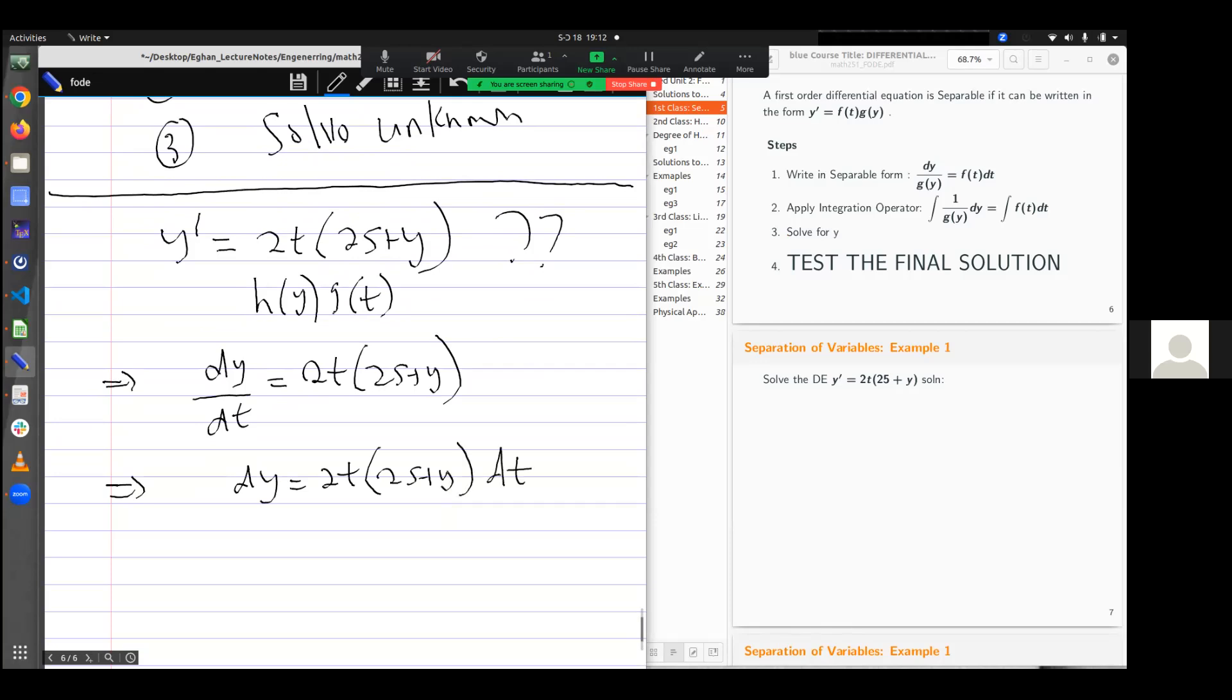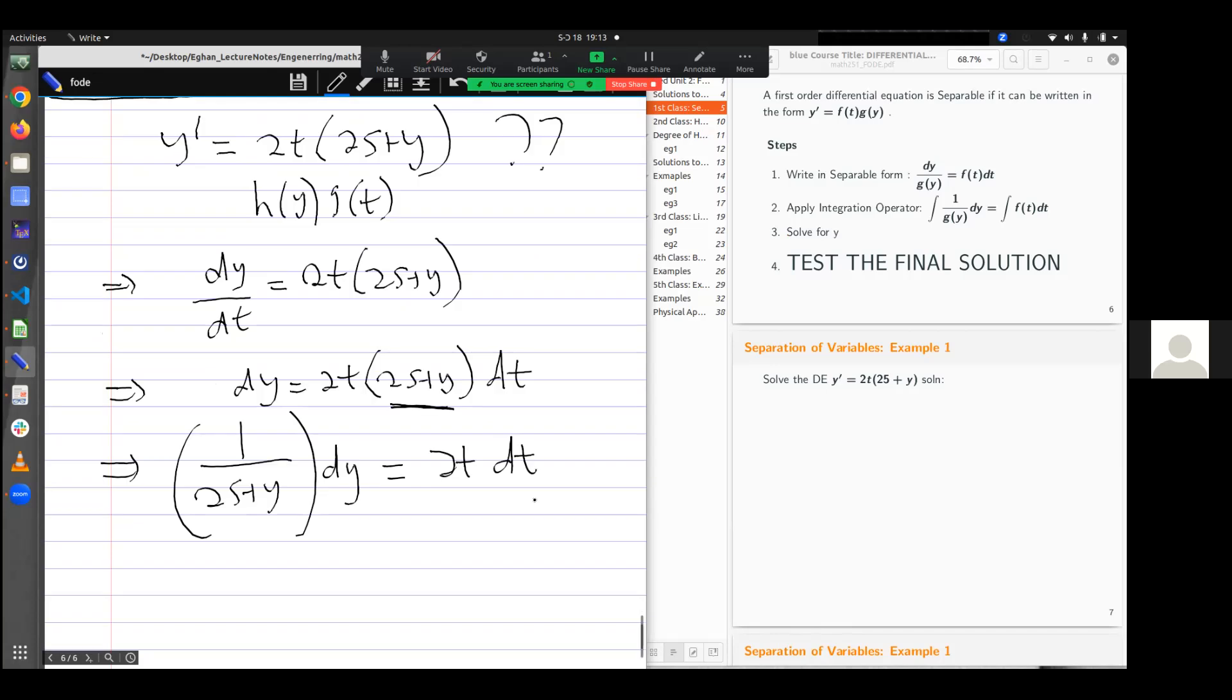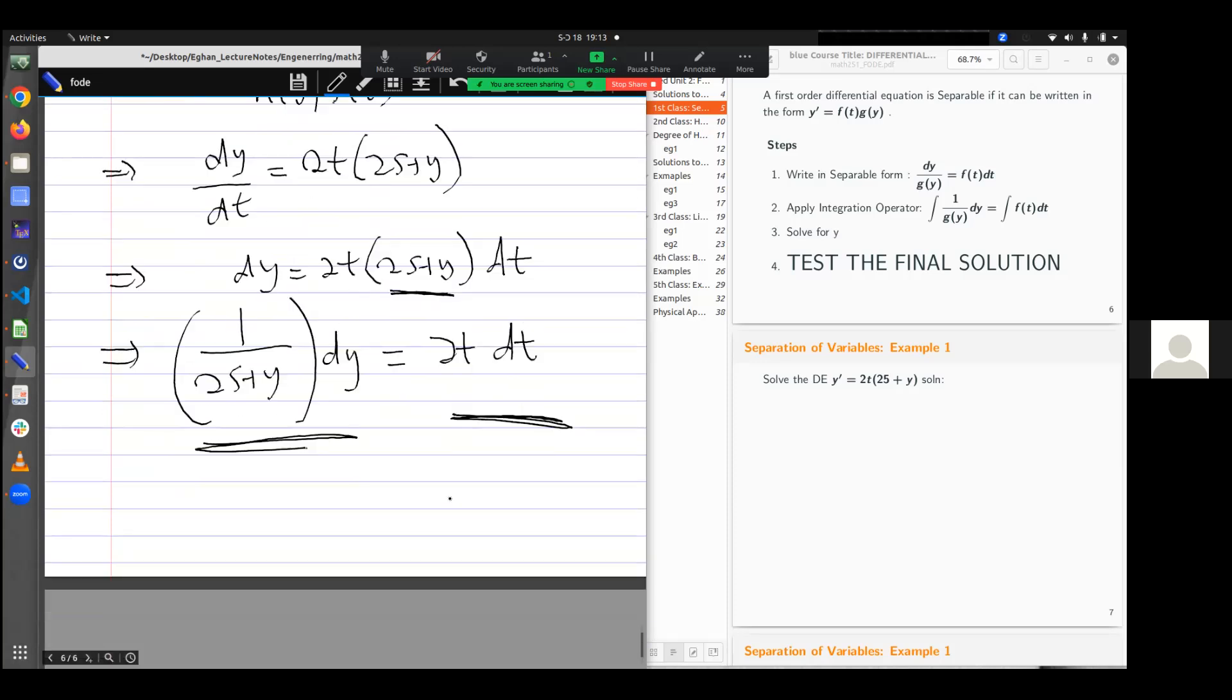I'll have dy is equal to 2t(25 + y) dt. I have not separated this because I still have some terms of y here. What I can do is divide through by that term. So I have 1/(25 + y) dy equal to 2t dt. This is separable because I have terms of y only and I have terms of t only. Hence the equation is separable.